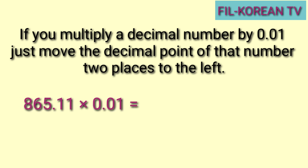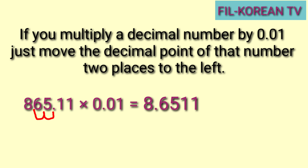Another example: eight and eleven-hundredths times one-hundredth. Okay, ang gagawin natin, i-move natin ang decimal point ng dalawang ulit pakaliwa — one, two. At dito natin ilalagay ang decimal point sa gitna ng eight at saka six. Kaya ang answer ay eight and six thousand five hundred eleven ten-thousandths.